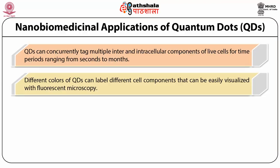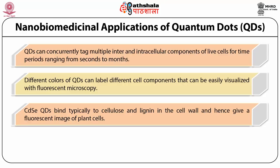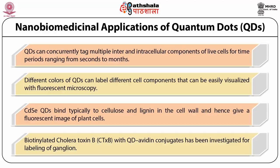Different colors of quantum dots can label different cell components, easily visualized with fluorescent microscopy. By controlling quantum dot size to tune the band gap, you can develop quantum dots with different fluorescent wavelengths to label different cell components in different colors — for example, lysosomes, nucleus, and cytoplasm. Cadmium selenide quantum dots typically bind to cellulose and lignin in cell walls, giving fluorescence images of plant cells. Biotinylated cholera toxin B can bind with quantum dot–avidin conjugates for labeling of ganglia.